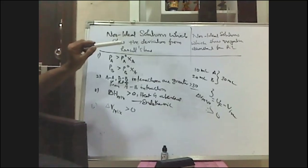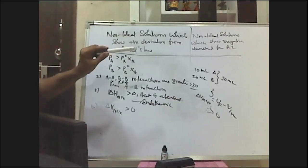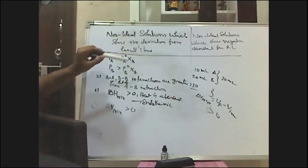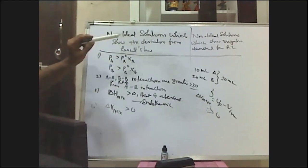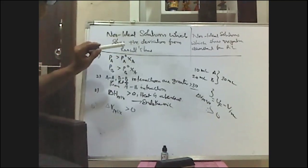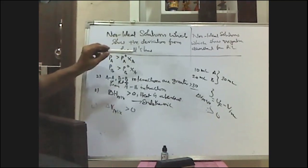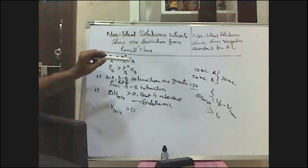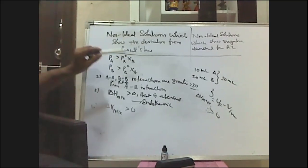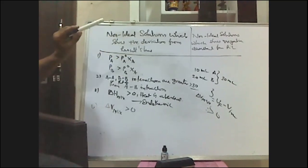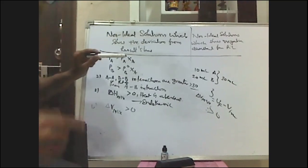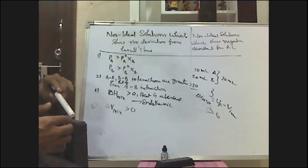Because AA and BB interactions are greater than AB interactions, the liquids A and B escape easily from the solution, showing higher vapor pressures than the expected value. This explains why experimentally determined vapor pressures are greater than the values calculated by Raoult's law.